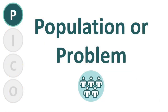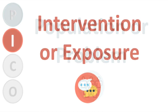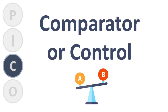P stands for population or problem. You're trying to determine what are the characteristics of the population or patient, or what is the problem, condition, or disease that you're interested in researching. I stands for intervention or exposure — intervention refers to the treatment that will be provided to subjects enrolled in your study. C stands for comparison, which identifies what you plan on using as a reference group to compare with your treatment intervention. Examples of comparisons might be placebo, control groups, different drugs, surgery, etc.